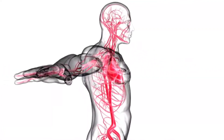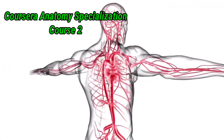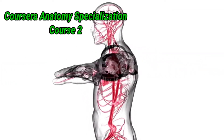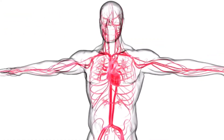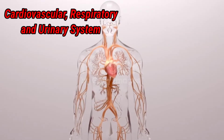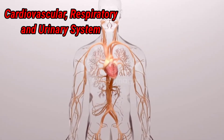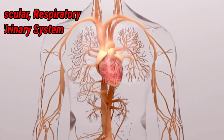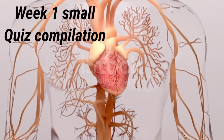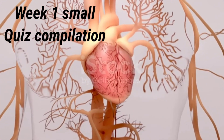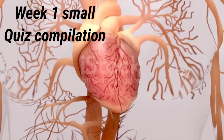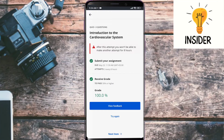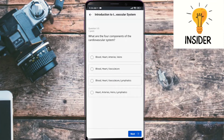Hey everyone, hope you're all doing well. Today we're going to start the second course of the Coursera Anatomy specialization, which is about the cardiovascular, respiratory, and urinary system. Today I'm going to do the small quizzes of week one. The first quiz is about introduction to the cardiovascular system.